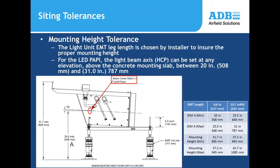A marking on the outside of the PAPI light unit indicates the center of the optical field. This is used to measure the height of the PAPI above the ground and to ensure that all PAPI units are lined up with each other and at the same height across from the runway.